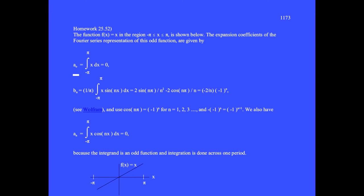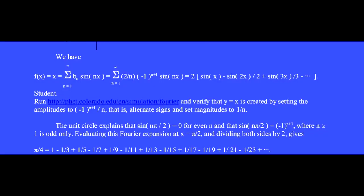The coefficient a0 is found first of all, and that is 0 in this case. The coefficient b sub n is found with this integral to be minus 1 to the n plus 1 power. We then have our function f of x equal x to be equal 2 times sine of 1x minus sine of 2x over 2 plus sine of 3x over 3 and so on.